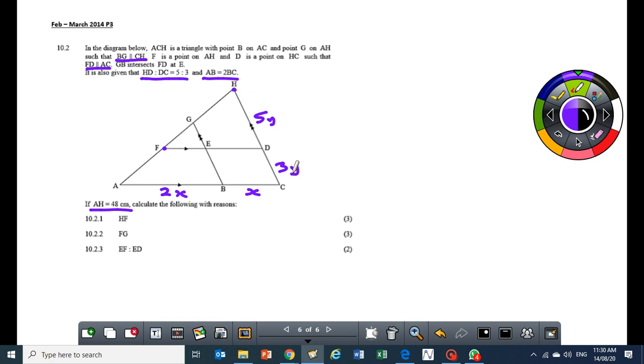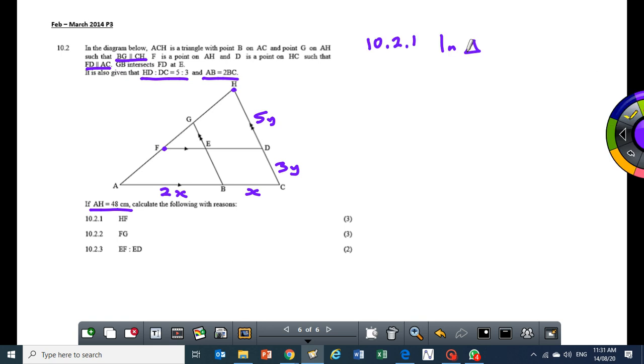If I want HF, HF is the length from here up to there. Now, I can use my knowledge because this is three months. First step is to identify your triangle that you can use the proportional theory. So in triangle ACH, I can write, because I want HF.